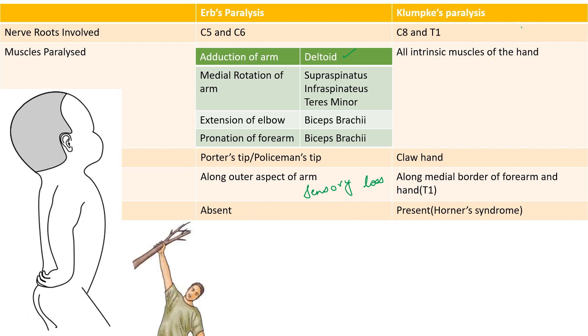Klumpke's paralysis, on the other hand, occurs in case of hyperabduction of the arm. For example, when one falls on the outstretched hand or during delivery, when there is extended arm in a breech presentation.